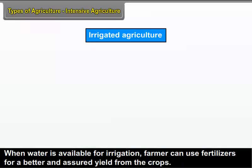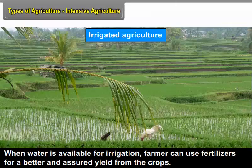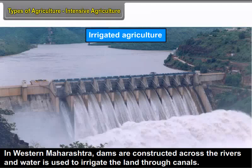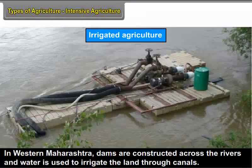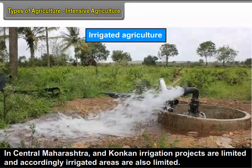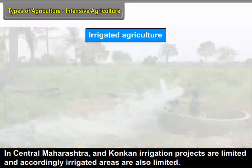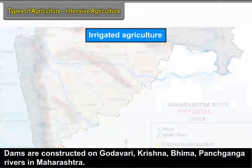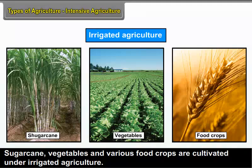When water is available for irrigation, farmers can use fertilizers for a better and assured yield. In western Maharashtra, dams are constructed across rivers and water is used to irrigate the land through canals. In central Maharashtra and Konkan, irrigation projects are limited and accordingly irrigated areas are also limited. Dams are constructed on the Godavari, Krishna, Bhima, and Panchaganga rivers. Sugarcane, vegetables, and various food crops are cultivated under irrigated agriculture.